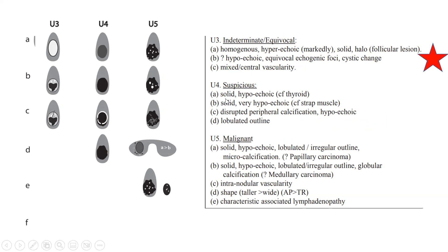U4 is suspicious: solid and hypoechoic — the moment you see hypoechoic, start thinking about suspicion of malignancy. U4 also includes solid and very hypoechoic nodules, disrupted peripheral calcification with hypoechoic appearance, and lobulated outline. U5 is malignant: solid, hypoechoic, lobulated, irregular outline, and microcalcification. Features include globular calcification suggesting medullary thyroid cancer, intranodular vascularity, shape taller than wide, and characteristic associated lymphadenopathy. All these are U5 — radiologically malignant.